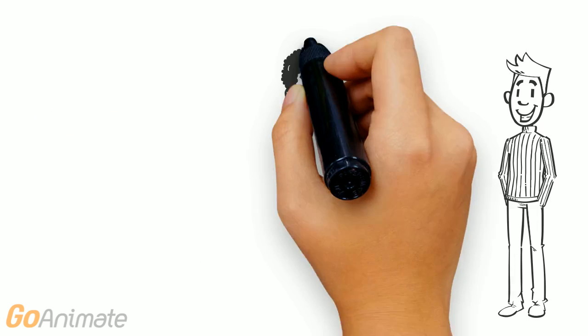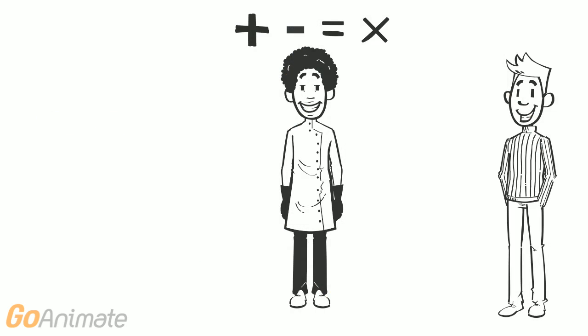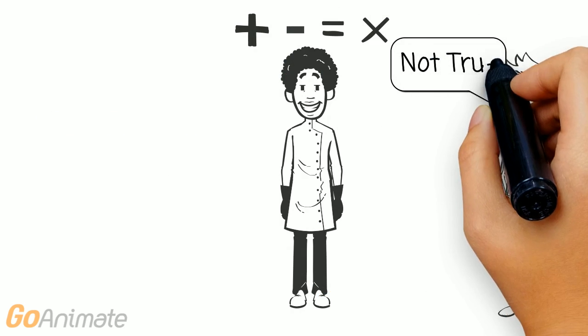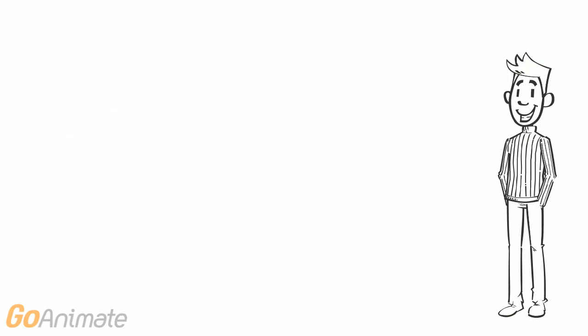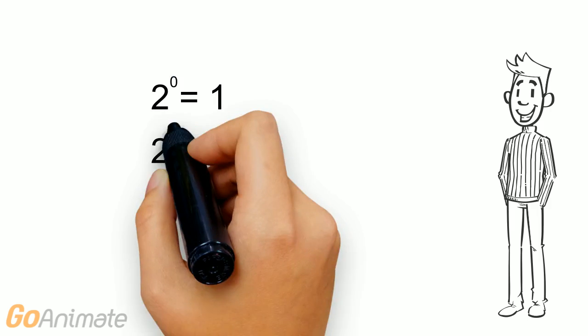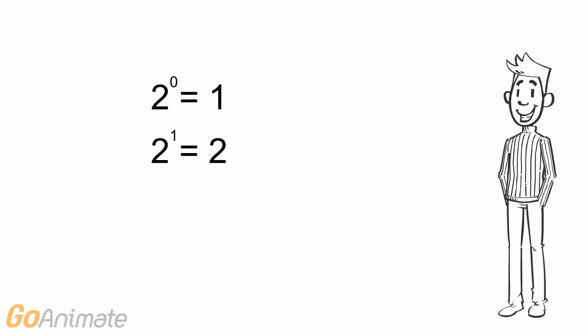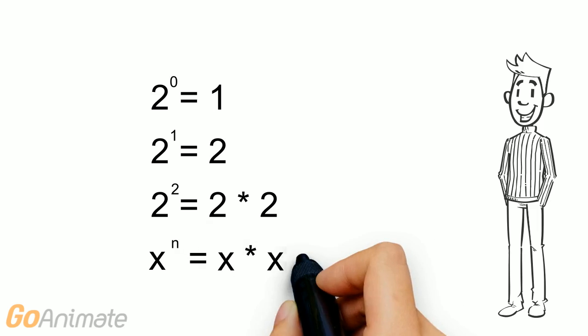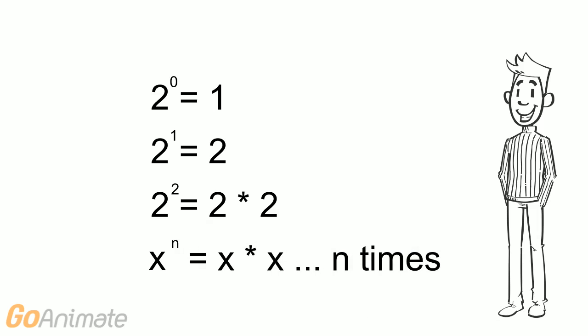Now you may be worried that you need to be a math or science genius to understand this stuff. But that's just not true. In fact, the only math you need to understand is this: 2^0 = 1, 2^1 = 2, 2^2 = 2 × 2. We can generalize this by saying any number, which we'll call x, raised to any power, which we'll call n, is equal to x multiplied by itself n times.